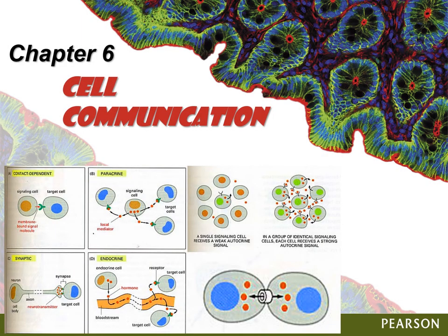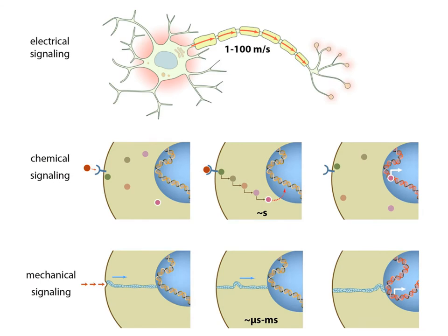Hello again, welcome to the chapter 6 cell communication video section. We're going to wrap up the final 20 minutes or so of this chapter, and then next time we'll move on to chapter 7 and apply this cell communication in the endocrine system. To summarize what we've covered so far in chapter 6, we broke out the basic parameters of signaling: input, reception, transduction, and then some kind of effect. We even broke out the idea of electrical signaling like in this neuron here, and we talked about mechanical signaling just a little bit.